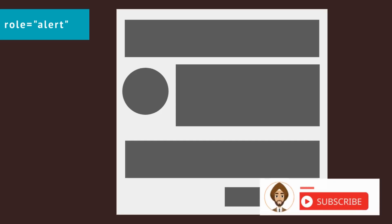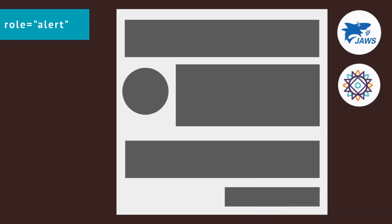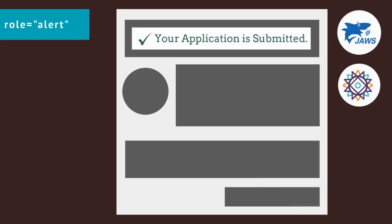Role alert is one of the five live regions. It is used to provide users with important and time-sensitive information. Screen readers will immediately announce the updated content to the user as soon as it happens on the page — for example, a success or an error message appearing on the page.